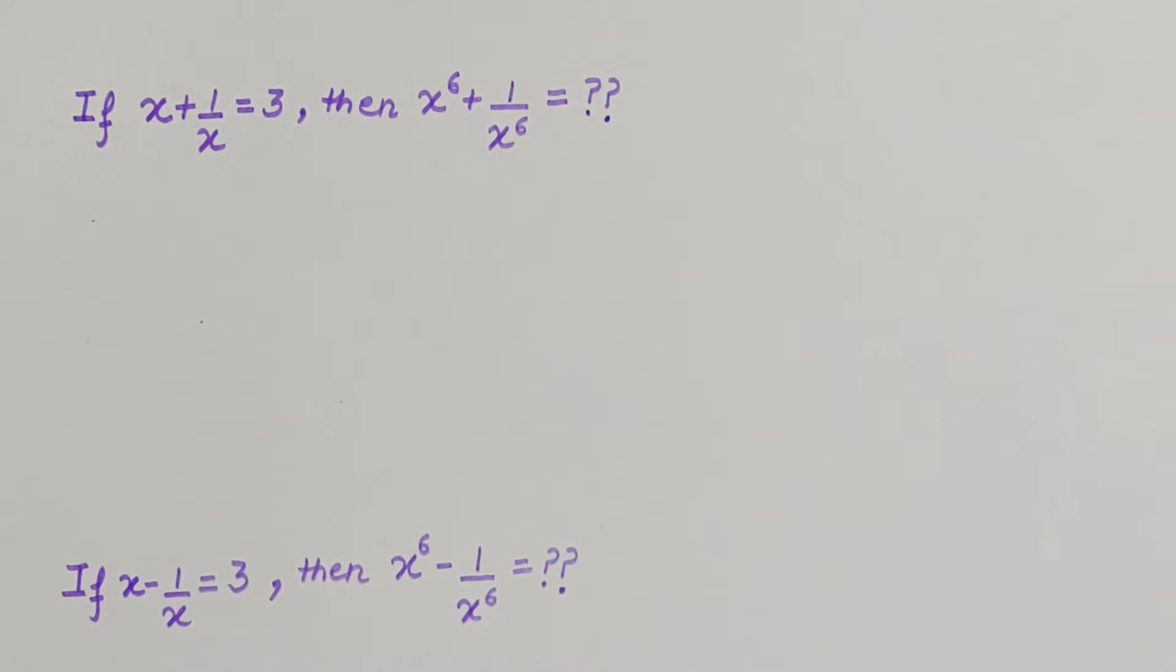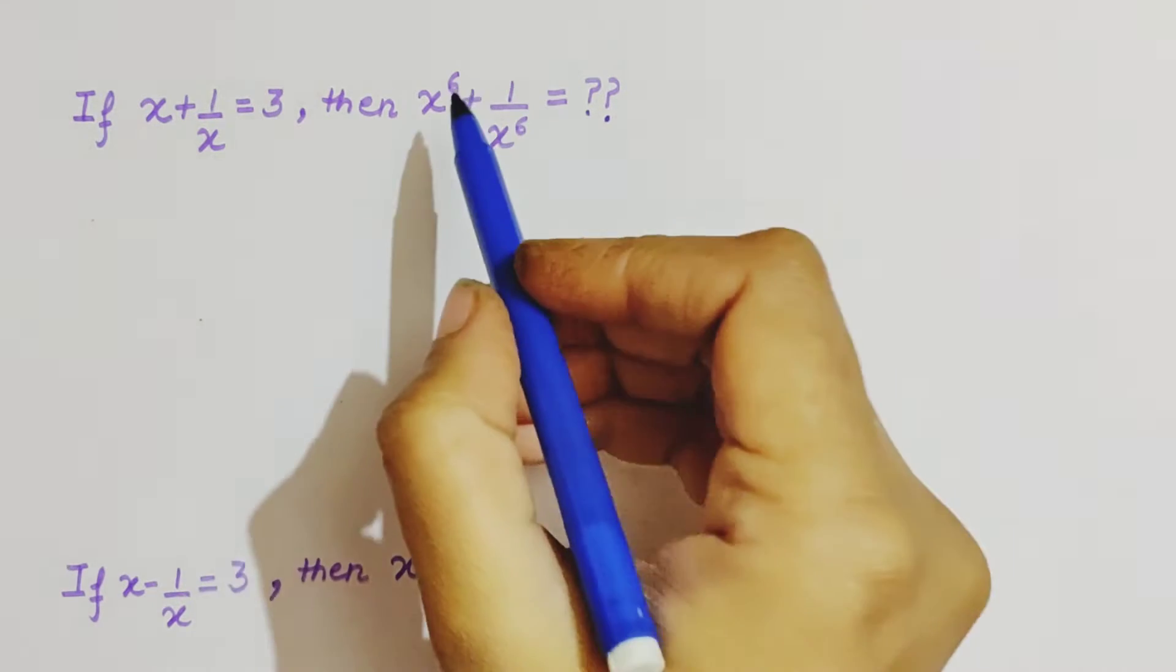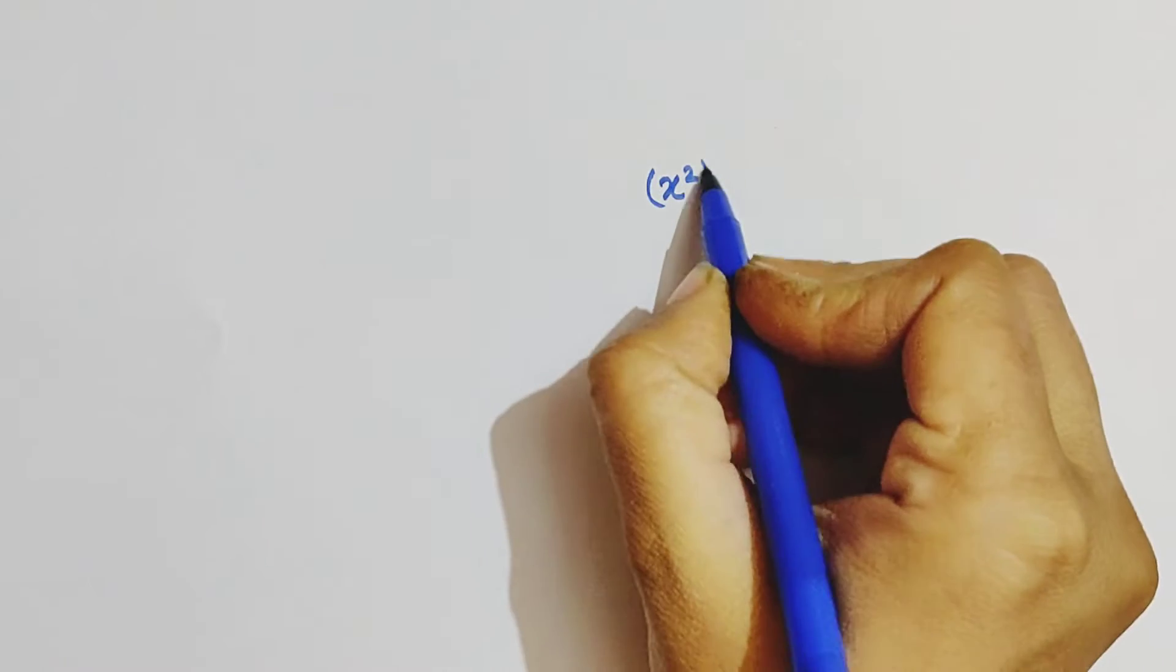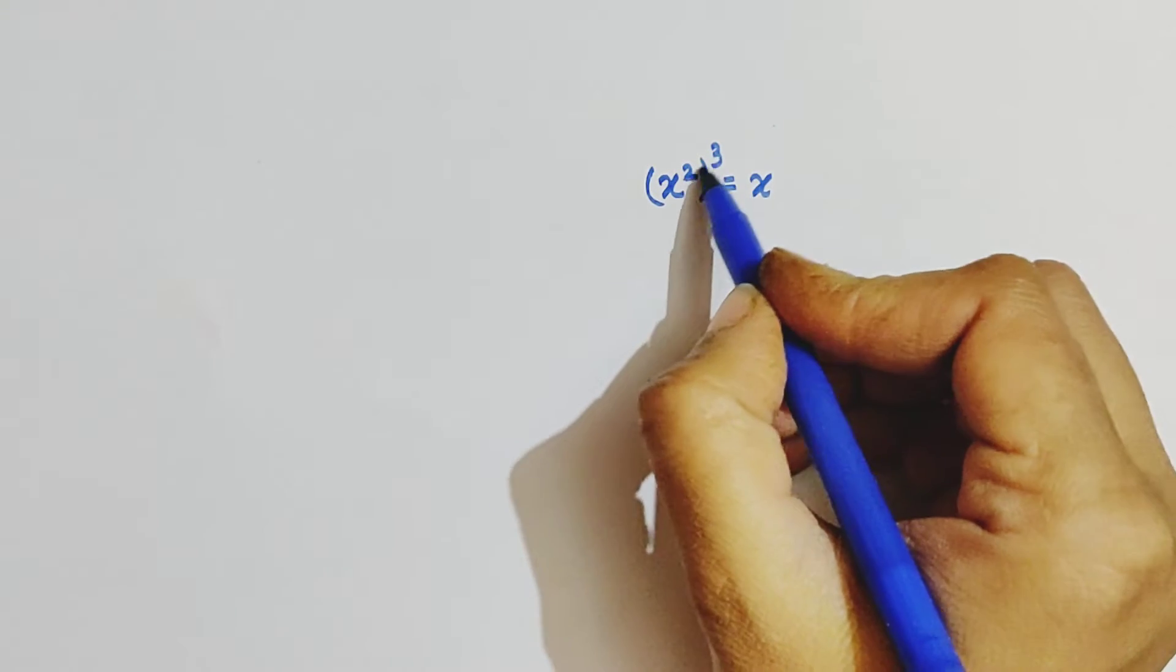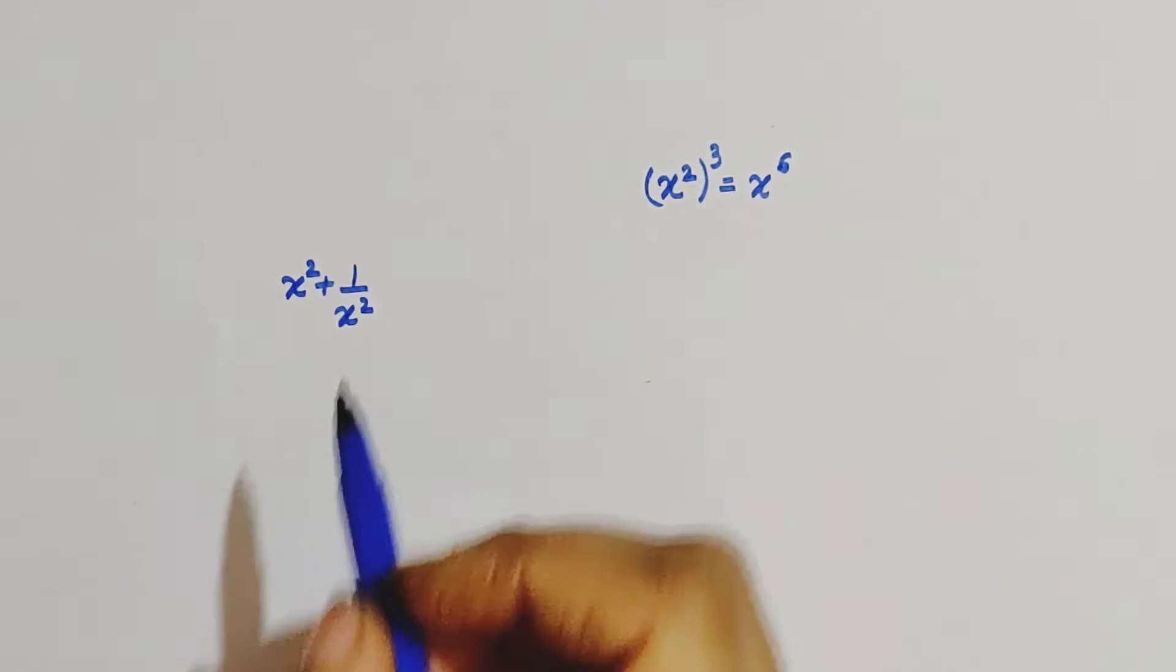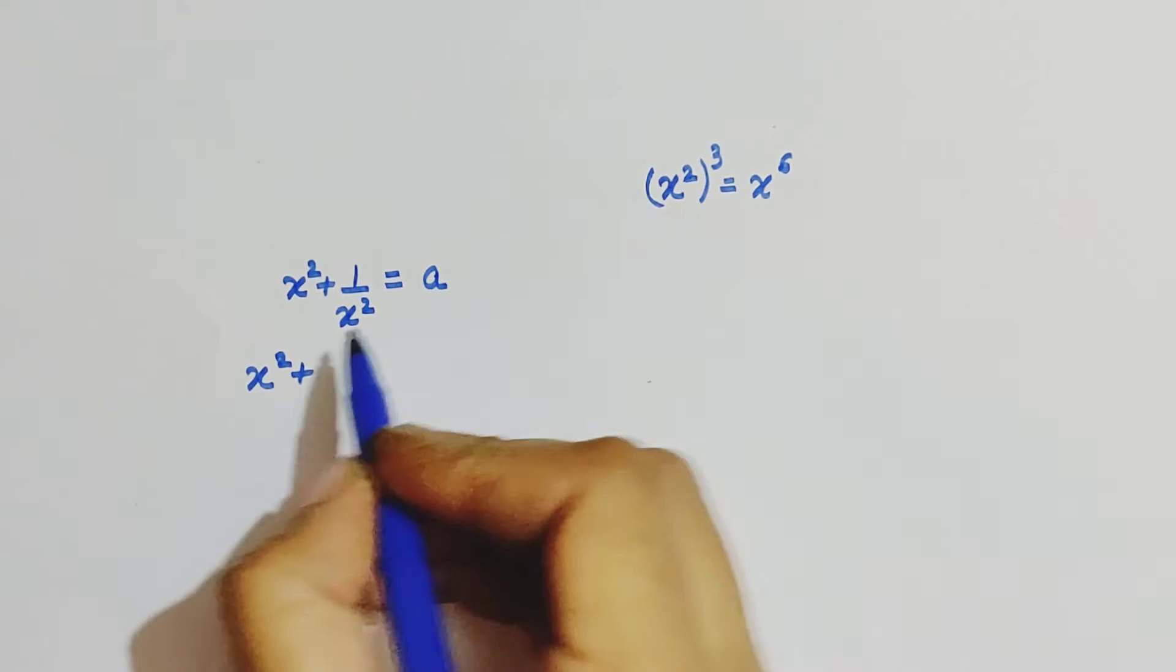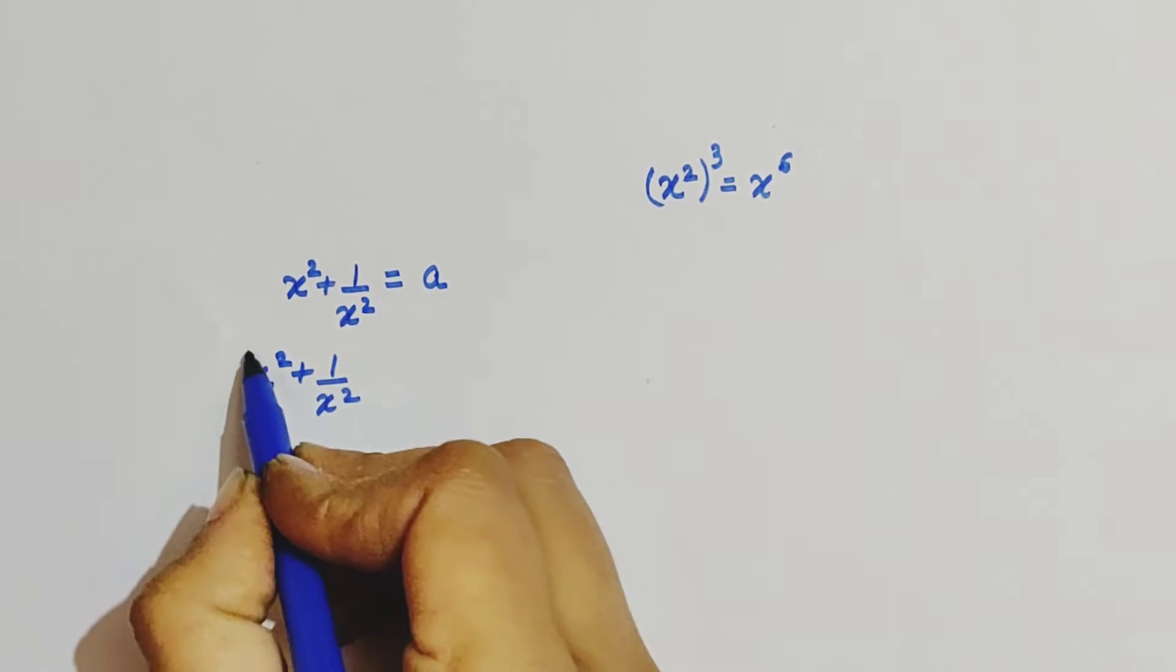Coming back to our questions, let's see when we will get this power 6. If we take x square and do its cube, then these two powers will get multiplied. This will be x to the power 6. Similarly, if we find this value, say this is equal to a, then to find power 6, you can cube this equation on both sides.